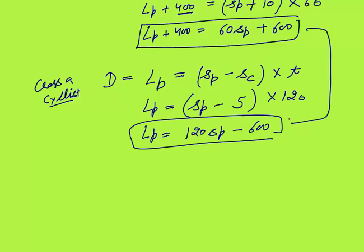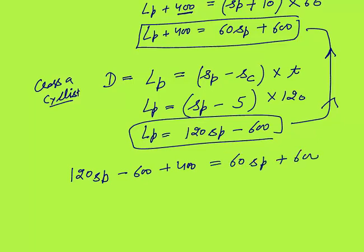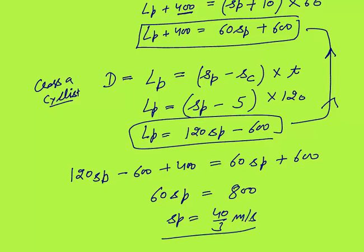Substituting the value of Lp from equation 2 into equation 1: (120Sp − 600) + 400 = 60Sp + 600. This gives 60Sp = 800, so speed of train P = 40/3 m/s.